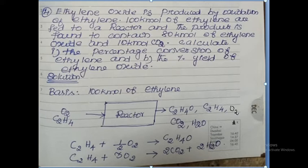How many components are present on the product side? Ethylene oxide is the main product. Carbon dioxide is the side product. Water is the side product. Ethylene is an unreacted component. Oxygen is an unreacted component. Totally, five components are present in the product stream.